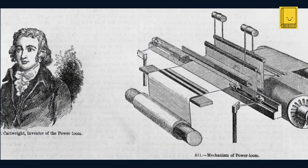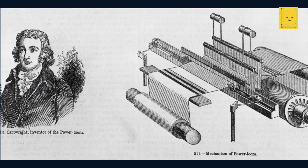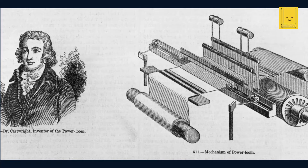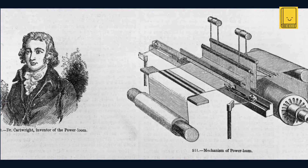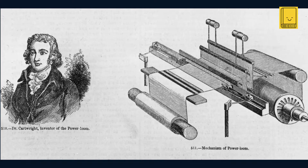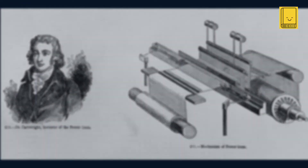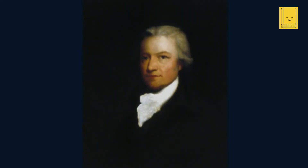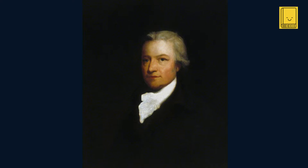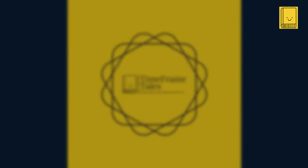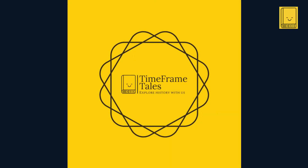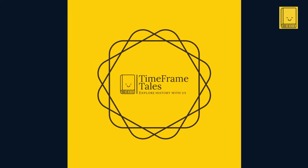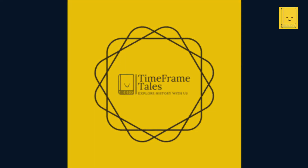But the journey of the power loom, much like the Industrial Revolution itself, was not just about the machinery. It was a story interwoven with social, economic, and cultural threads, each playing a crucial role in this era of unprecedented change. In this episode, we will delve into the life of Edmund Cartwright, unravel the mechanics of his power loom, and explore its profound impact on the textile industry and beyond — uncovering how this invention wove itself into the very fabric of the Industrial Revolution.